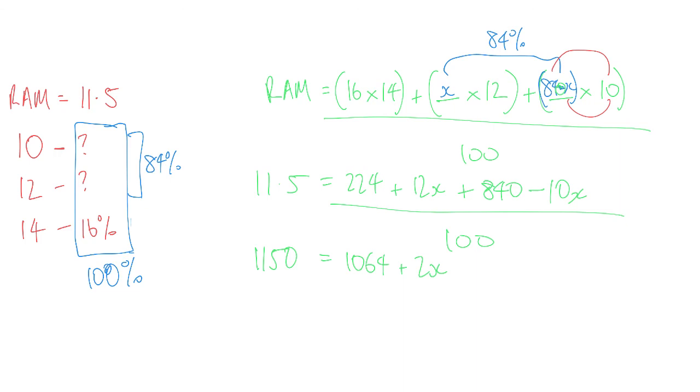So plus 2x. Therefore we can bring this 1064 across, so we do 1150 subtract 1064, which makes that 86, and that's equal to 2x. And so therefore x is equal to half of that, which happens to be 43%.